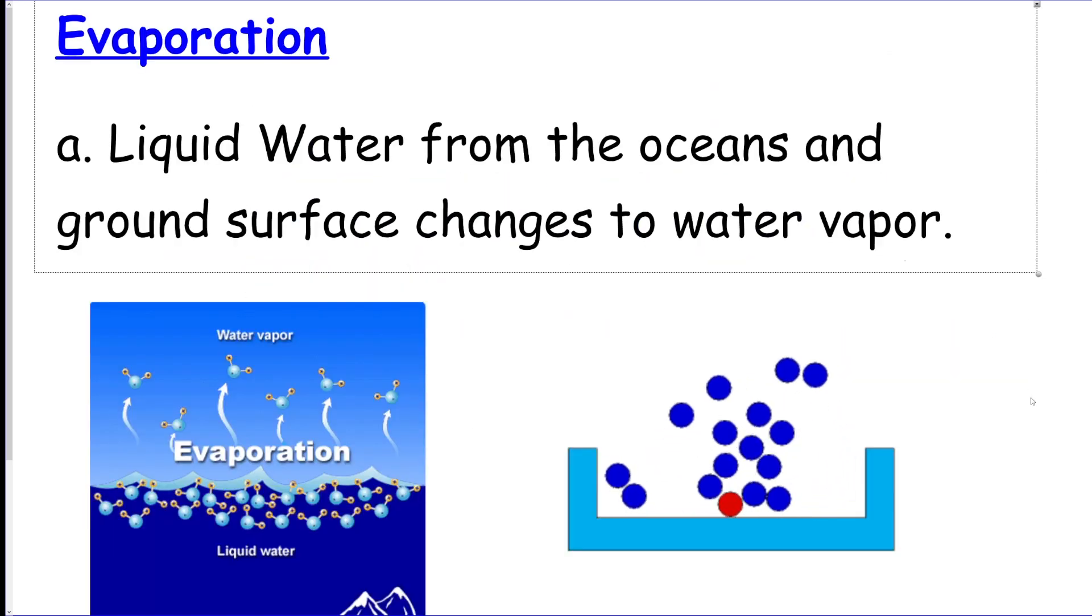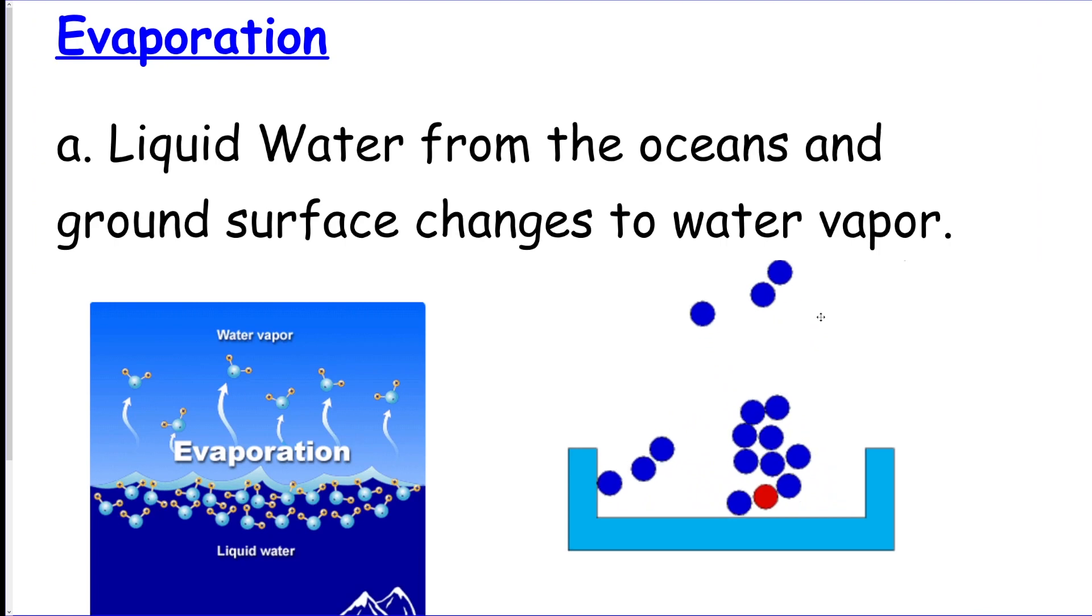The first thing we're going to talk about is evaporation. This is a phase change where liquid water found in oceans, lakes, rivers, and streams gets heated up. The molecules get excited, spread out, and eventually evaporate, turning into gas. This little picture down here shows it pretty well - the liquid is going to go up into the sky. That's the first step of the water cycle.